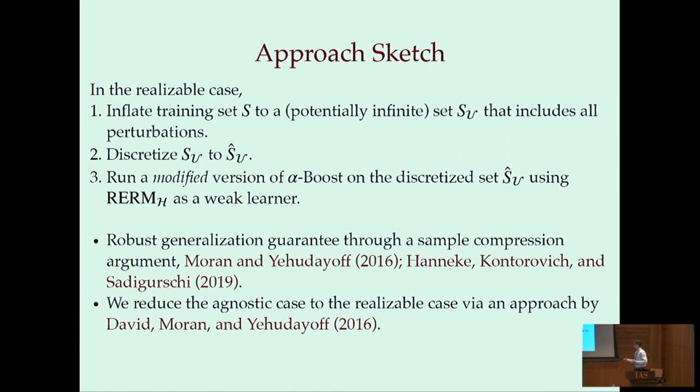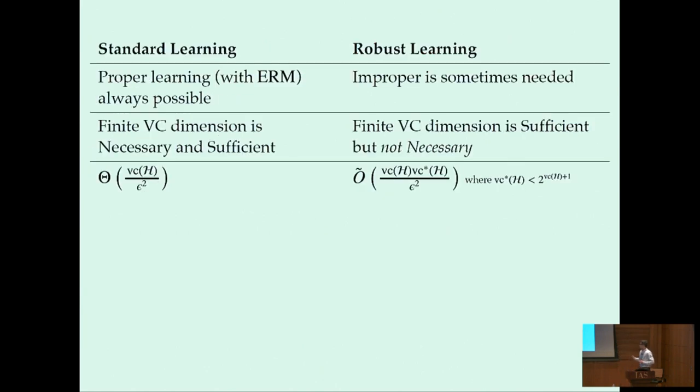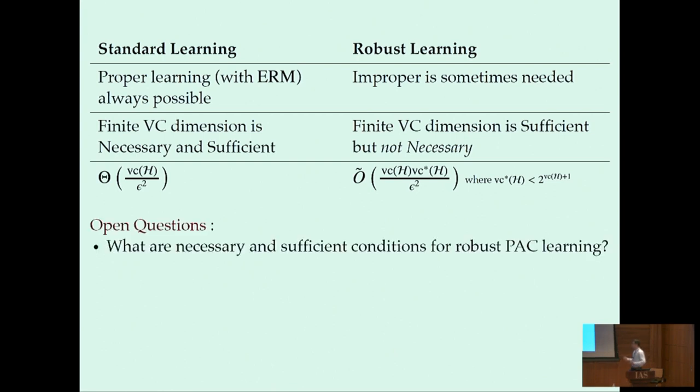So with this in mind, the picture now is as follows. For standard PAC learning, we know that proper learning in particular with ERM is always possible and it's enough information theoretically. But for robust learning in this work we show that sometimes we really need to be improper. In terms of characterizing learnability, in standard PAC learning we know that the VC dimension is necessary and sufficient. Finite VC dimension is necessary and sufficient. For robust PAC learning, in this work we show that finite VC dimension is sufficient, but there is a simple construction that shows that it's not necessary for robust learnability. And so an open question here is what are necessary and sufficient conditions for robust PAC learning.